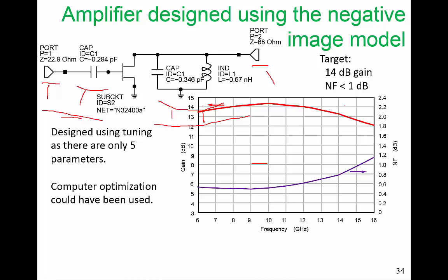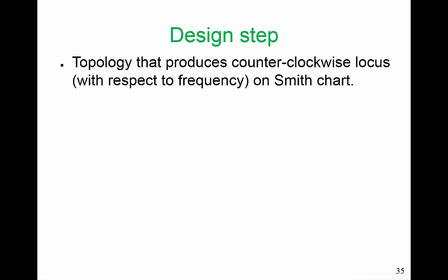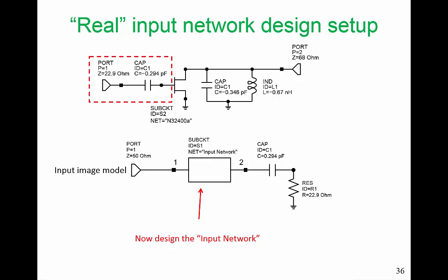We could have used computer optimization — we could have optimized the value of the port impedances and the two capacitors and inductors — but it's such a simple problem, we really appreciate being able to get a feel for our circuit while we're designing it. Now at this design step, what we really need is a topology that produces a counterclockwise locus with respect to frequency on the Smith chart. A normal passive circuit wants to rotate with respect to frequency in the clockwise direction, and all linear passive circuits will do that overall.